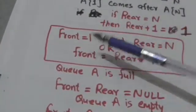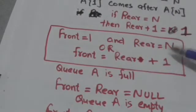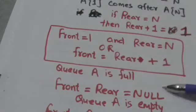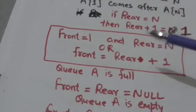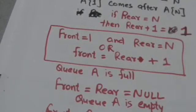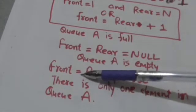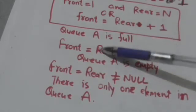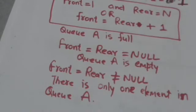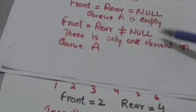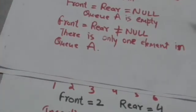If front is equal to 1 and rear is equal to n, or if front is equal to rear plus 1, then queue A is full. If front and rear are both equal to null, then queue A is empty and does not contain any element. If front and rear are equal but not equal to null, then there is only one element in queue A.